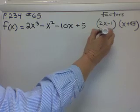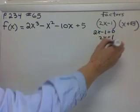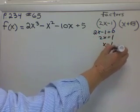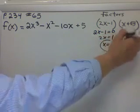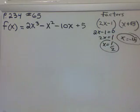I need to solve this by going 2x minus 1 equals 0. So 2x equals 1, x is 1/2, that's one of the answers. x equals minus root 5 is the second of the answers.